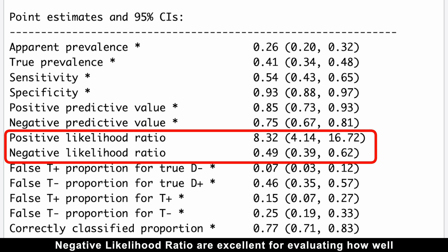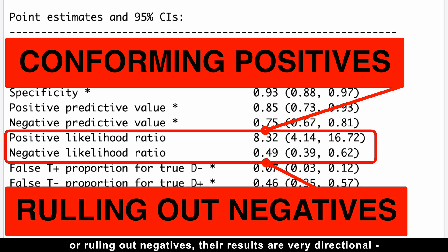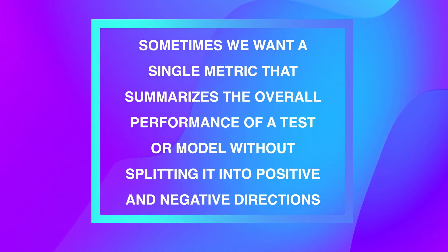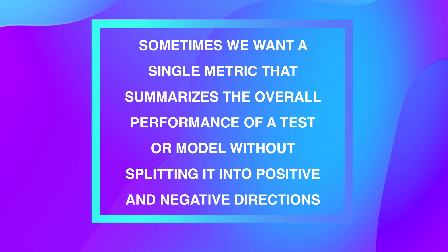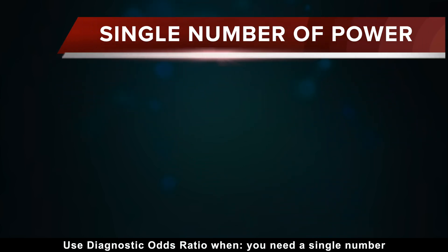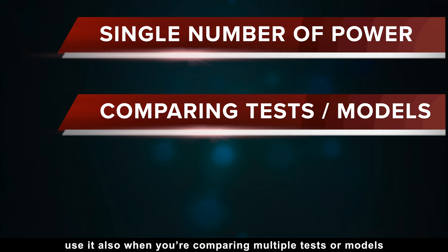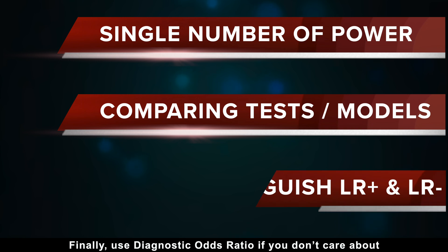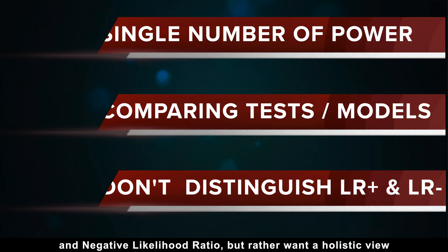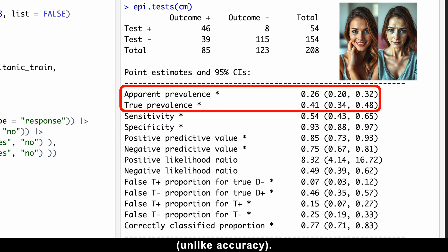While positive and negative likelihood ratios are excellent for evaluating how well a test confirms positives or rules out negatives, their results are very directional — either towards positive or towards negative. But sometimes we want a single metric that summarizes the overall performance without splitting into positive and negative directions. That's where the diagnostic odds ratio comes in. Use it when you need a single number to represent overall diagnostic power, when comparing multiple tests or models, or when you want a holistic view of how well the test discriminates between sick and healthy individuals — like accuracy, but completely independent of prevalence.